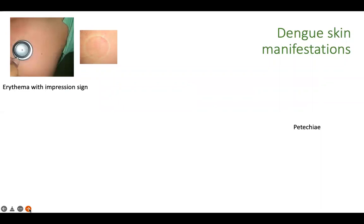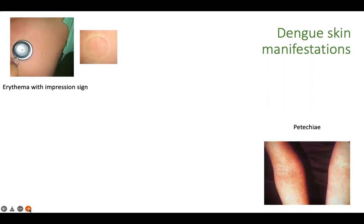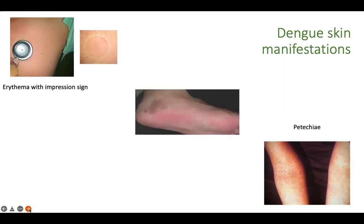One of the commonest manifestations in dengue is generalized erythema — the patient appears red in color, and you can see the impression sign where pressure leaves a visible mark. Frank petechiae and mucosal bleeds may also be seen. During recovery, some patients develop erythema of the lateral margin of the sole, known as the Surat sign.